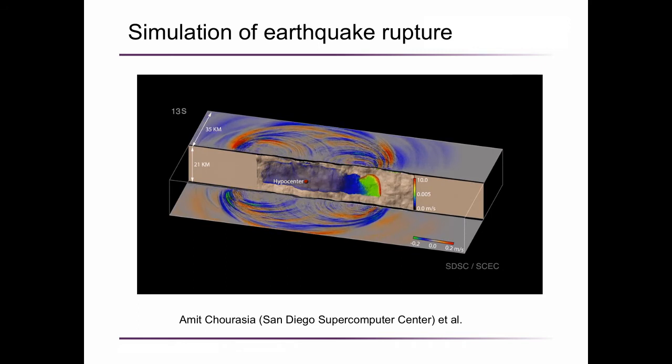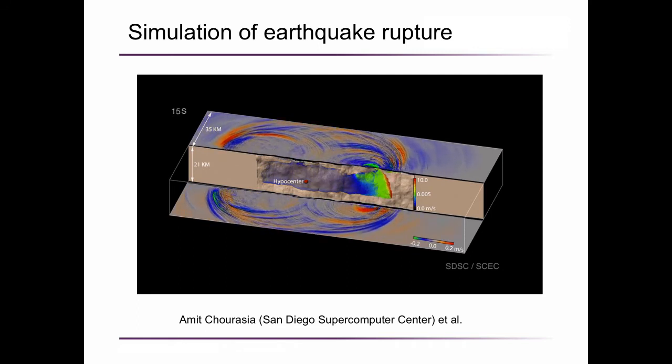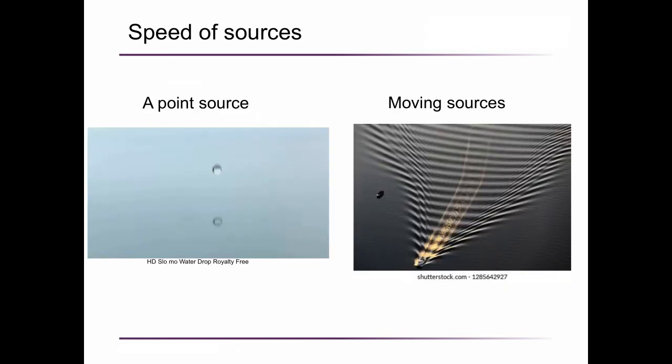The leading edge of the slipping area is what we call rupture front. The rupture speed describes how fast the rupture front is moving. The relation between rupture front and seismic waves is analogous to these examples of water waves.